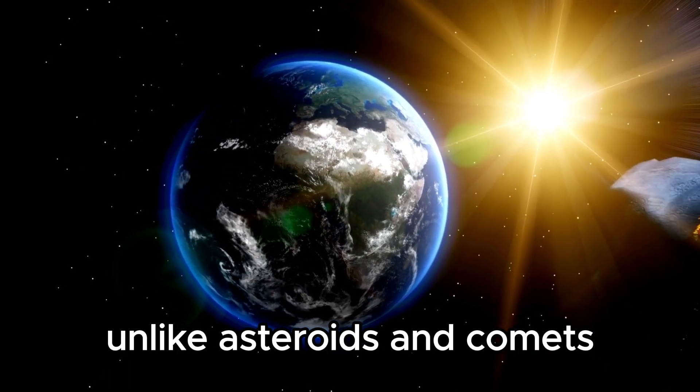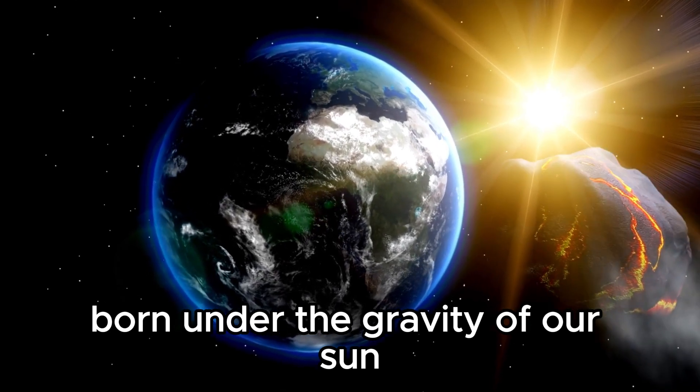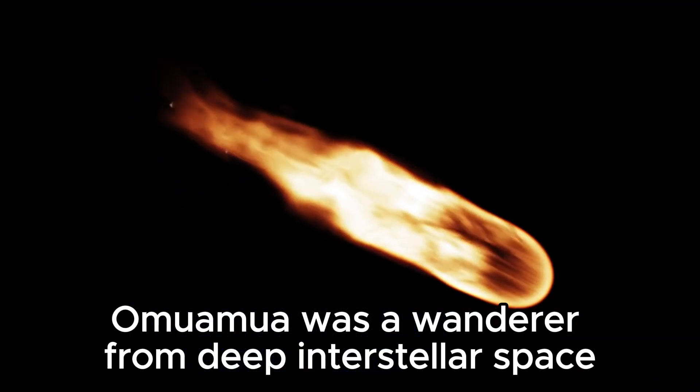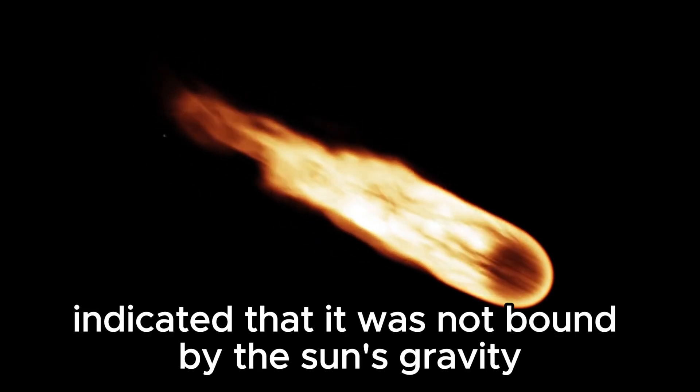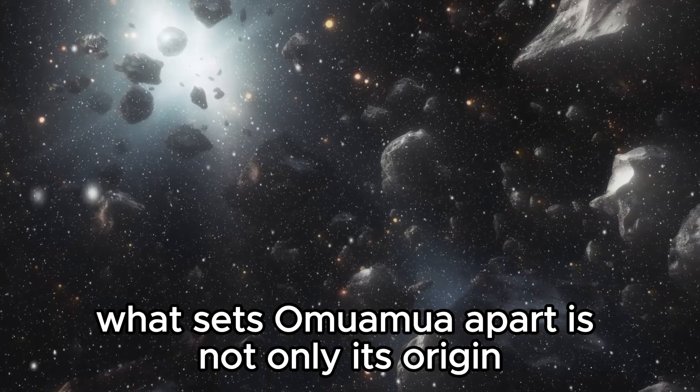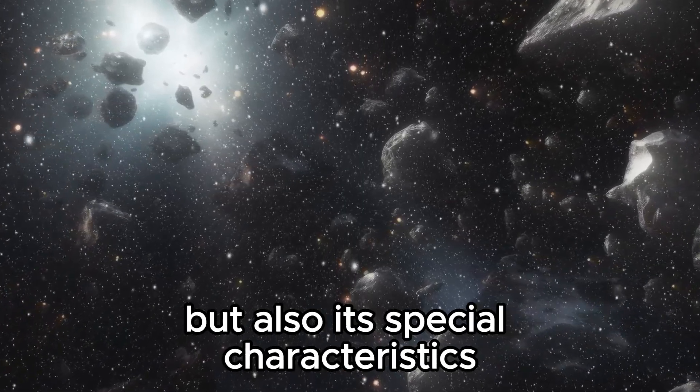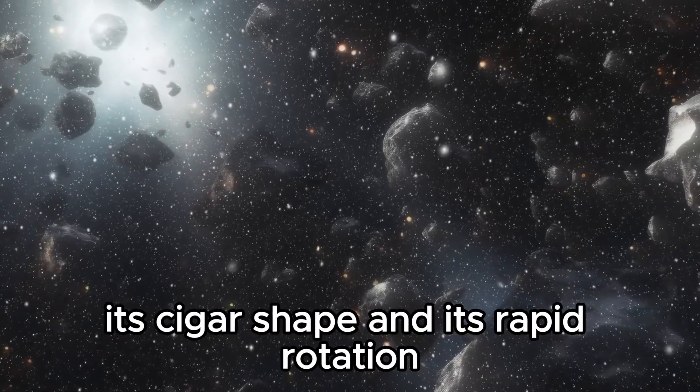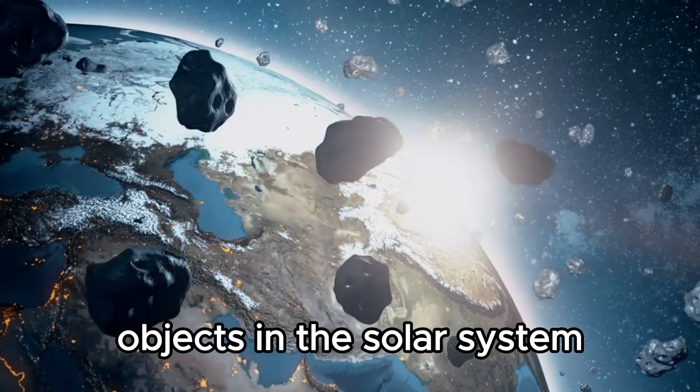Unlike asteroids and comets born under the gravity of our sun, Oumuamua was a wanderer from deep interstellar space. Its trajectory indicated that it was not bound by the sun's gravity, making it a transient visitor to our system. What sets Oumuamua apart is not only its origin but also its special characteristics. Its cigar shape and its rapid rotation don't fit the norms of typical objects in the solar system.